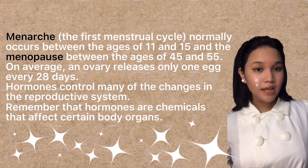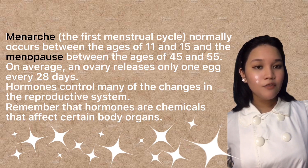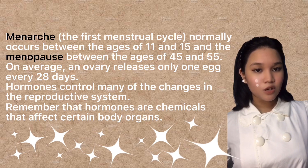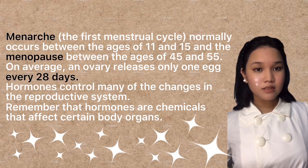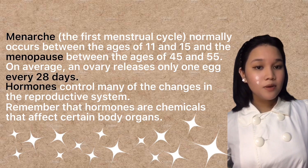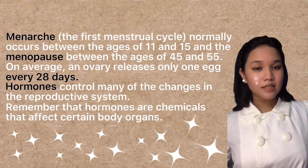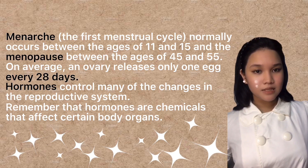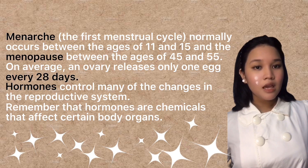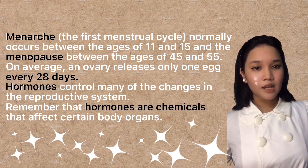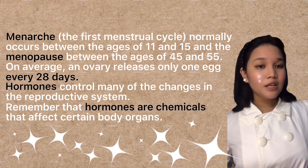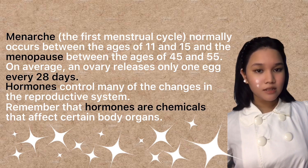On average, an ovary releases only one egg every 28 days. Hormones control many of the changes in the reproductive system. Remember that hormones are chemicals that affect certain body organs.